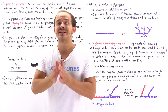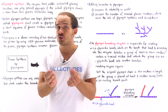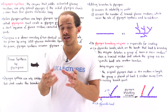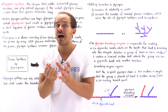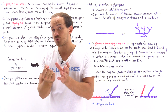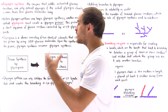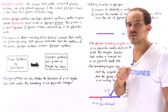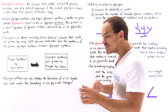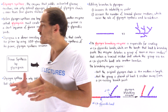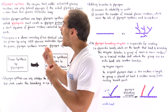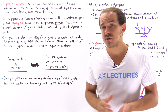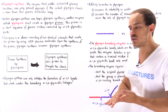Glycogenin is a dimer molecule — it consists of two identical polypeptide chains. What glycogenin does is create the primer from scratch, using the activated glucose molecules, the uridine diphosphate glucose molecules. As soon as that primer is synthesized by glycogenin, glycogen synthase takes over and begins synthesizing the alpha-1,4-glycosidic bonds.